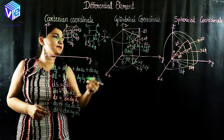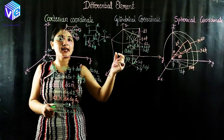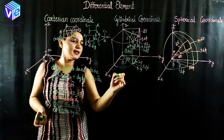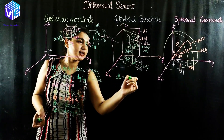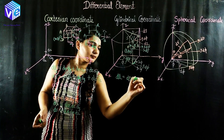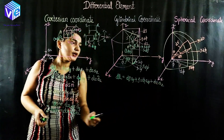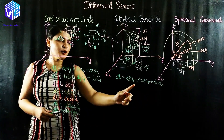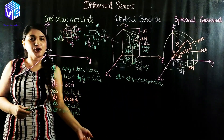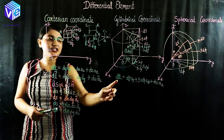Then moving from B to A, that element is dz. So the differential displacement dl in cylindrical coordinates is: d-rho in the direction of a-rho, plus rho·d-phi in the direction of a-phi, plus dz in the direction of a-z. Adding all three gives us the differential length dl.